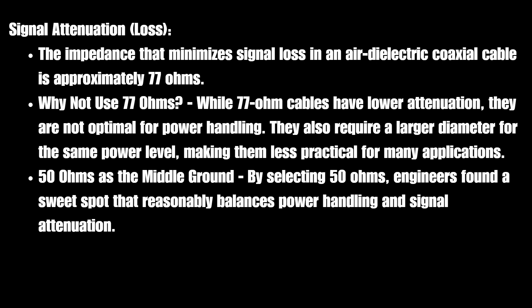When we say loss, we're talking about signal attenuation. The impedance that minimizes signal loss in an air dielectric coaxial cable is approximately 77 ohms. So why not use 77 ohms? While 77 ohm cables have lower attenuation, they are not optimal for power handling. They also require a larger diameter for the same power level, making them less practical for many applications. 50 ohms is the middle ground — by selecting 50 ohms, engineers found a sweet spot that reasonably balances power handling and signal attenuation.